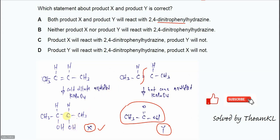So this one, product X is diol. It's not a ketone, it's not aldehyde. So X will not react with the 2,4-DNPH. The Y is the carboxylic acid, not aldehyde, not ketone. So Y will not react with 2,4-DNPH. Therefore, A is not the answer.